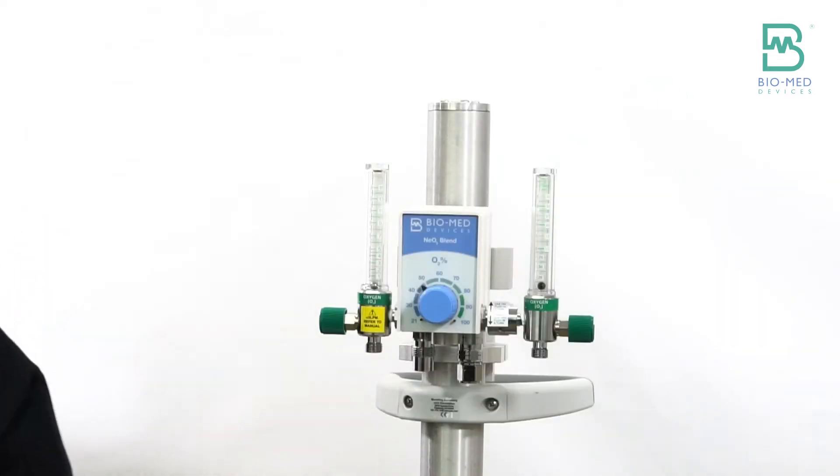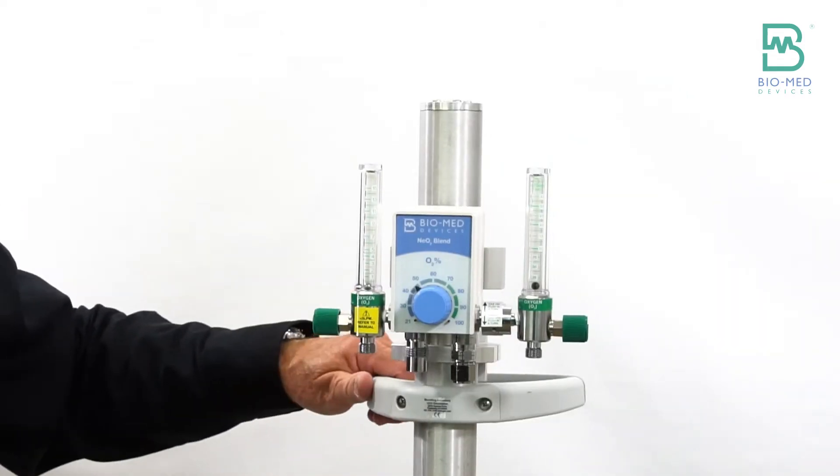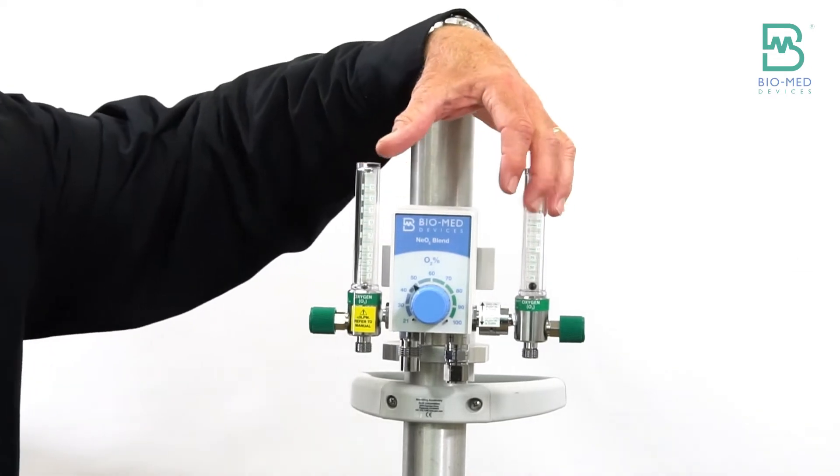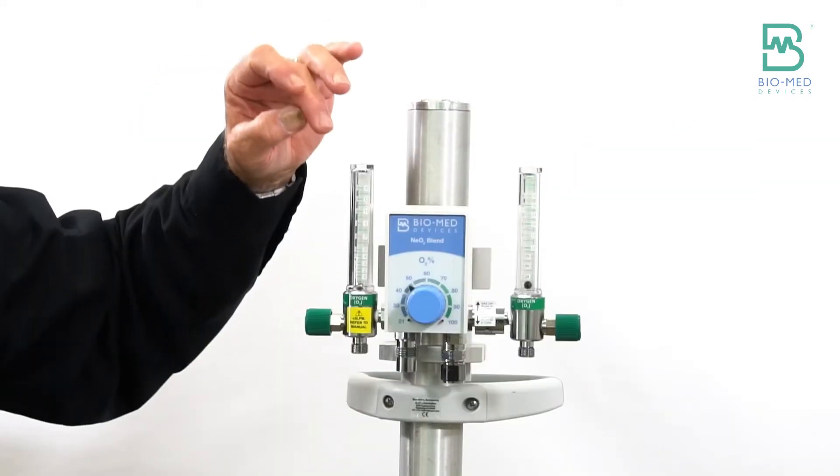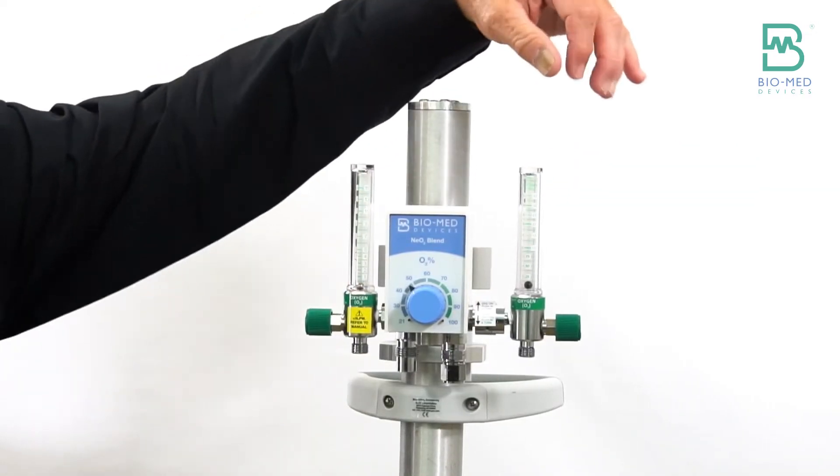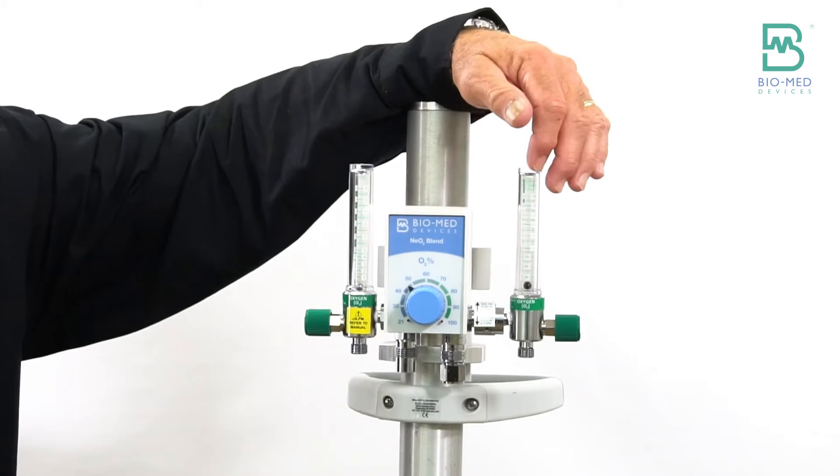So what we did is we came out with our Neo2 Blend. Rather than have the flow meters hanging out to the side, we actually hard mounted a zero to fifteen on this side so you can add your resuscitation bag.